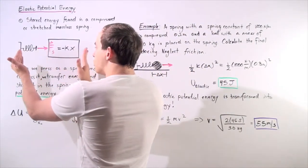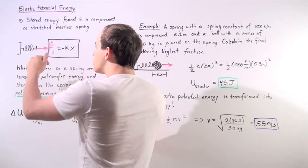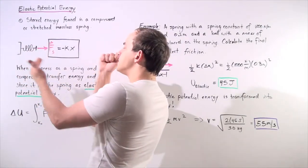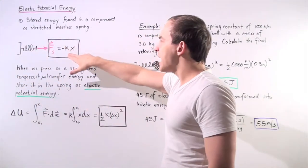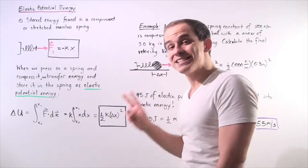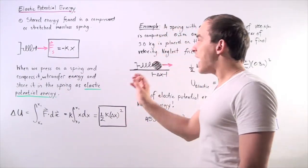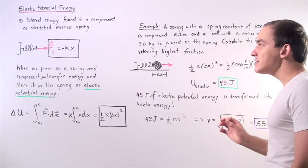If our spring is being compressed this way, the spring creates a force that points in the opposite direction. This k simply represents the stiffness in the spring, and that is called the spring constant.